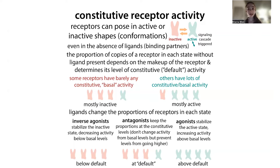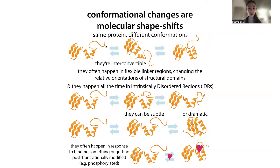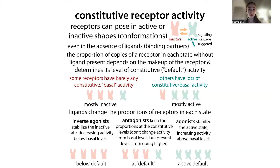So why would the receptor be active without a ligand? The current thinking is that receptors can be in an active or inactive conformation — remember, conformations are shapes. Which state it's in depends on several factors, and you'll have different proportions of the receptor in the active versus inactive states at any given time.